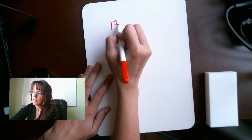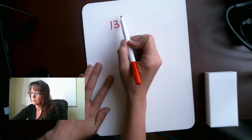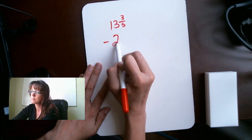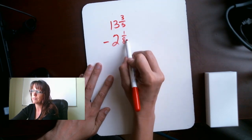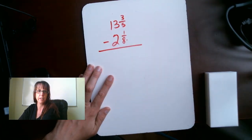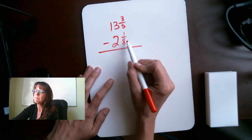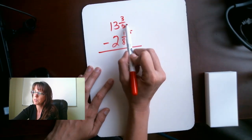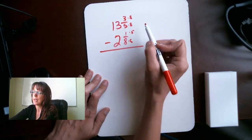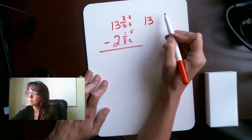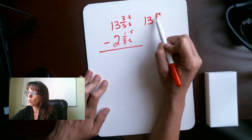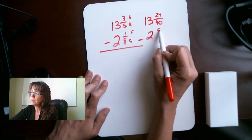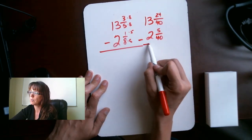Well, again, we're going to have to find that common denominator again. So, we're going to multiply this by 5 over 5. Multiply this by 8 over 8. And what we'll end up with is 13 and 24 over 40 minus 2 and 5 over 40. Good. All right.